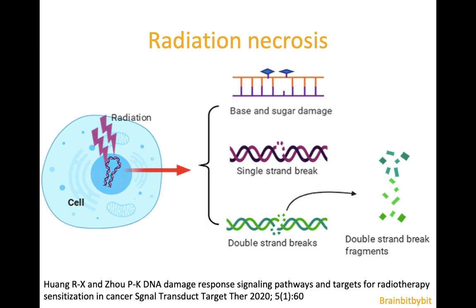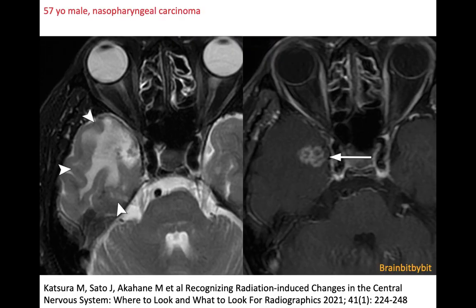I'm going to show images of radiation necrosis. Radiation induces DNA damage, leading to inability of cells to divide and to cell death. Radiation necrosis occurs months to years after radiation, so the interval is longer than in pseudoprogression that we discussed before.